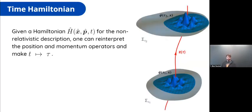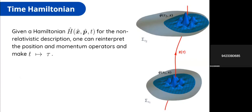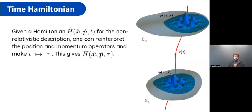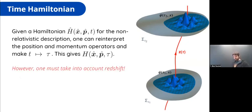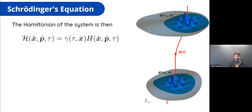The next step is to define the dynamics. We reinterpret the X and P operators according to the previous definitions and replace the external time parameter by the proper time of the curve. Doing this, we obtain a new Hamiltonian as a function of the new X and the proper time. However, we also need to take into account the redshift — each one of the surfaces may evolve differently through spacetime. So we multiply the Hamiltonian by a redshift factor. This curly H is essentially the redshift factor times the adapted Hamiltonian.